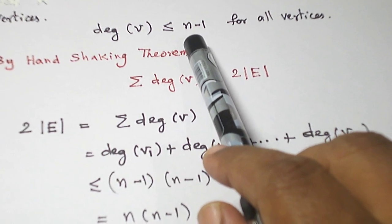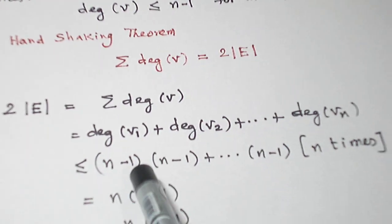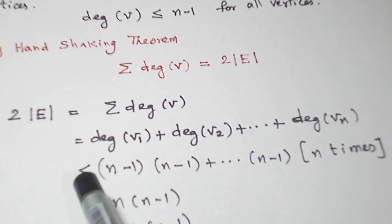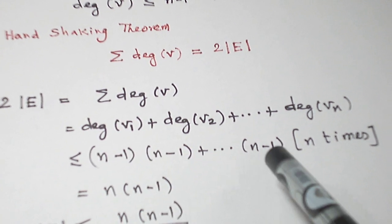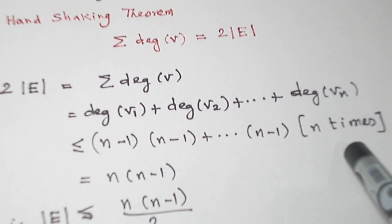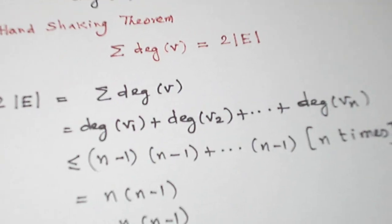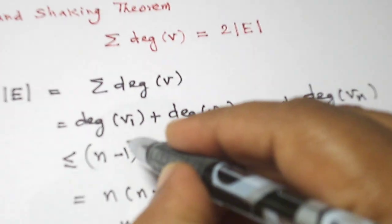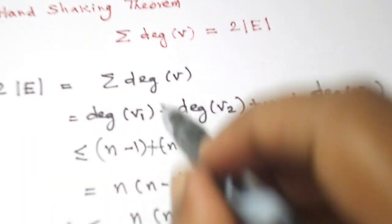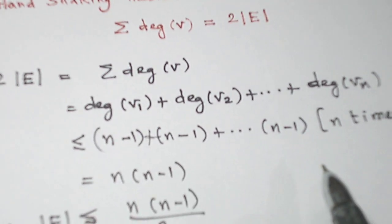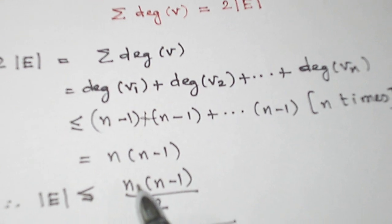We have seen the maximum degree for each vertex is n minus 1. So, applying the maximum here, this is less than or equal to n minus 1 for each vertex. So, n times we are having n minus 1. When we add this n minus 1 values for n times, we will get n into n minus 1.